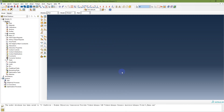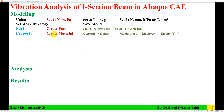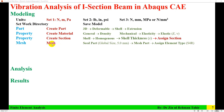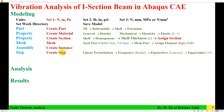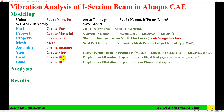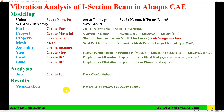The modeling steps are: create part, create material, create section, mesh, create instance, create step, apply boundary condition, and then run analysis to create a job and view results. These are all the steps I will follow for this analysis.